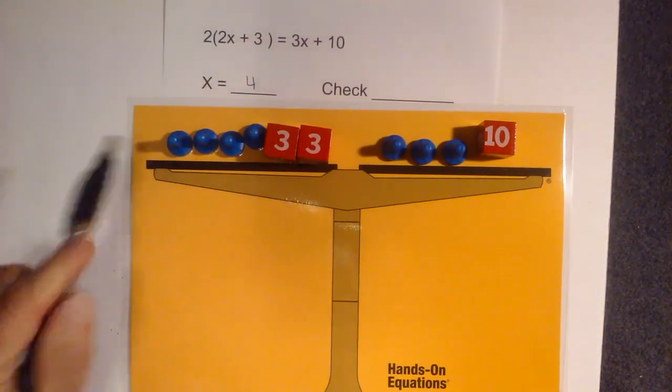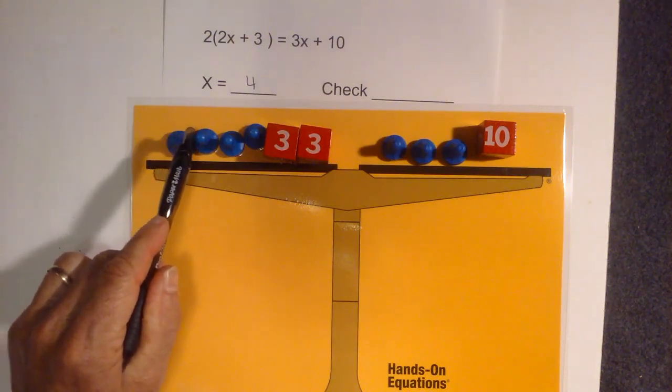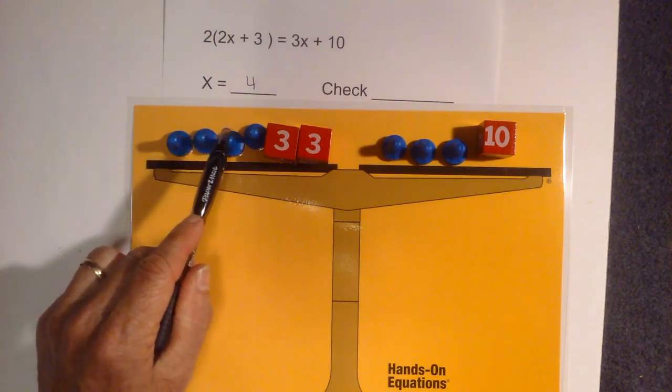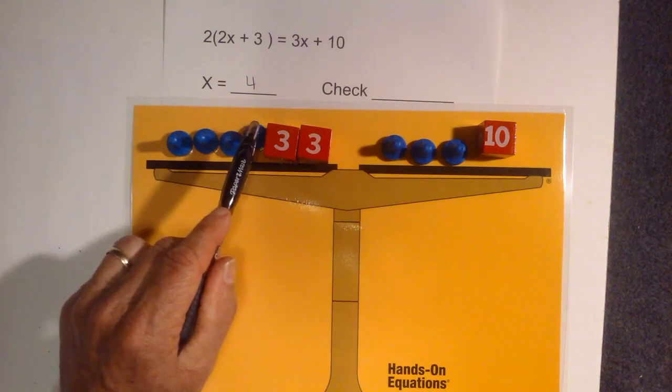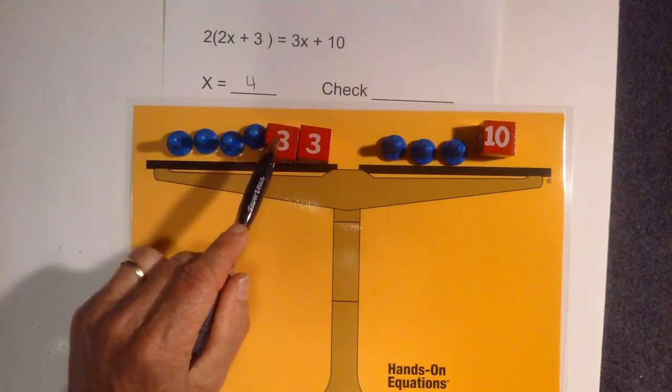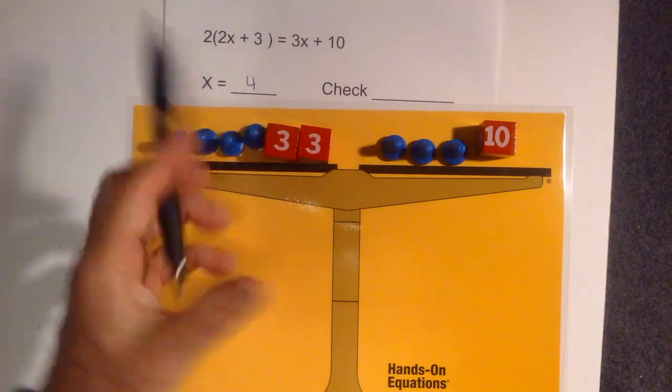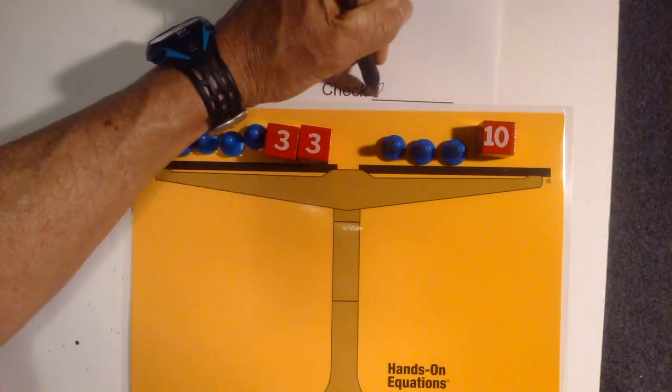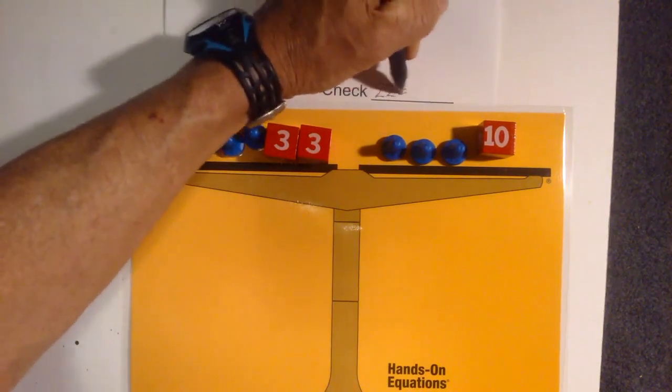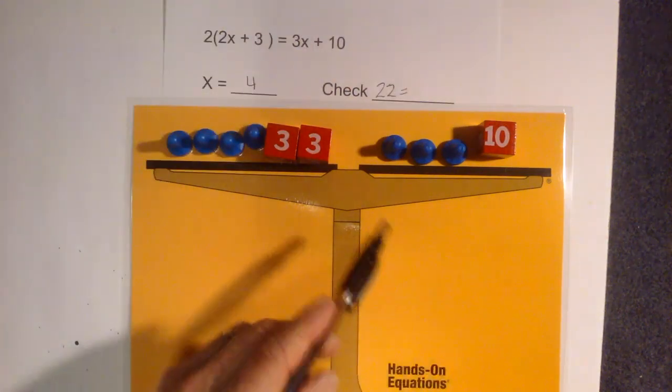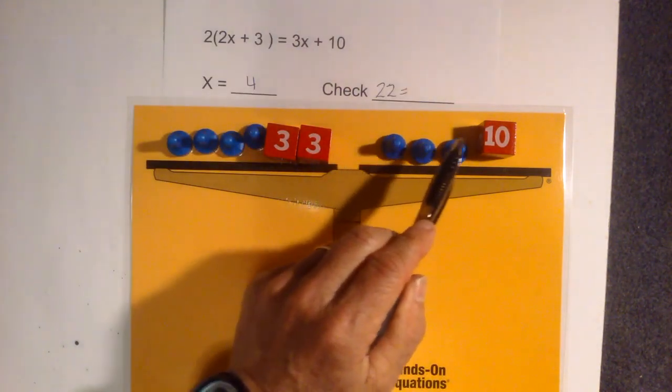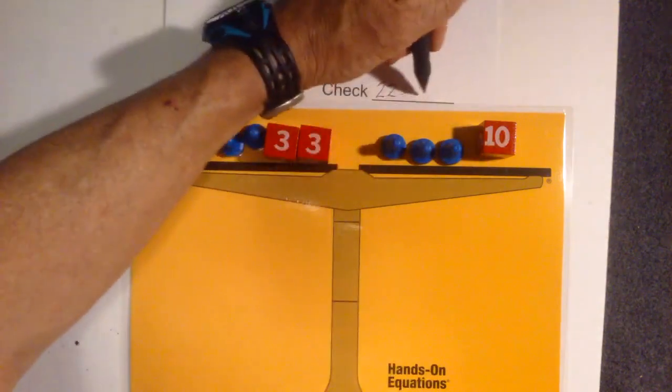So I will go 4, 8, 12, 16, 17, 18, 19, 20, 21, 22, so I have 22. And hopefully it will equal 22 on the other side. We have 4, 8, 12 plus 10 is 22.